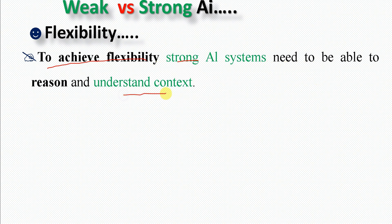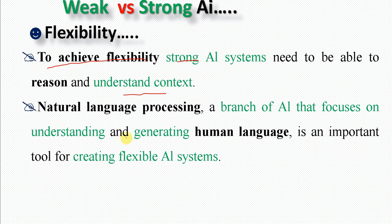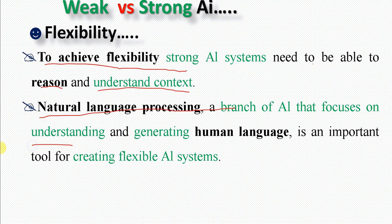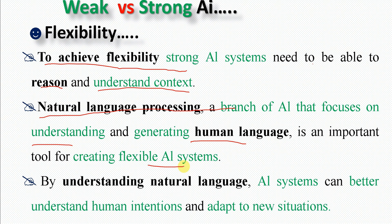To achieve flexibility, a strong AI system needs to be able to reason and understand context. Natural language processing, a branch of AI that focuses on understanding and generating human language, is an important tool for creating flexible AI systems. By understanding natural language, an AI system can better understand human intention and adapt to new situations.